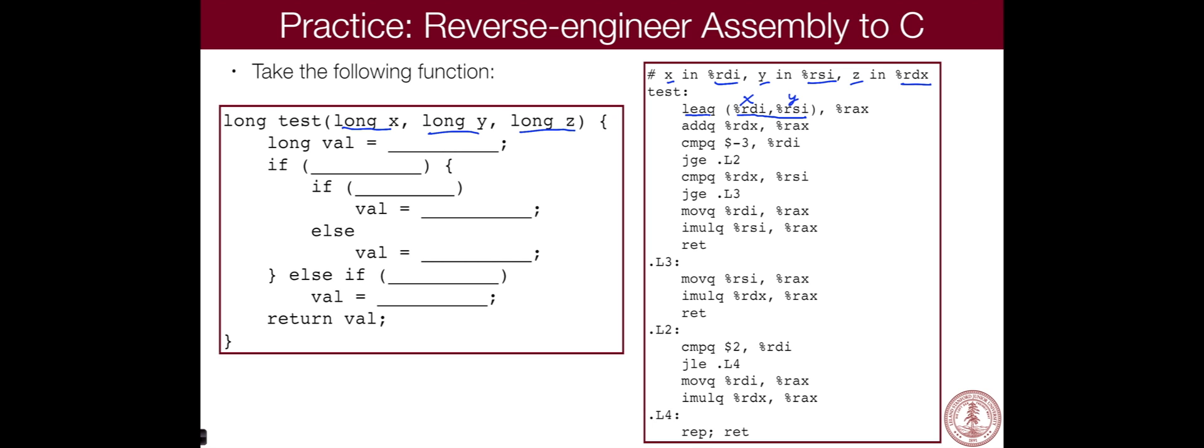So in this case, let's look at what we have here. RDI is X. RSI is Y. And with the parentheses and the comma here, this basically means X plus Y. So we're going to take X plus Y and we're going to put it into RAX, some other variable.